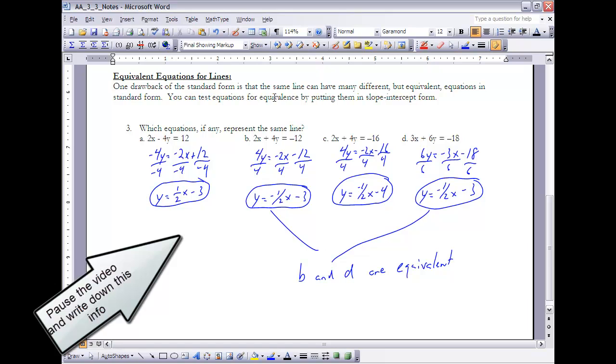When I do that, you'll notice that both B and D, you ended up with y equals negative one-half x minus three. Therefore, B and D are equivalent equations. And if you look at that, 2x plus 4y equals negative 12 and 3x plus 6y equals negative 18. If this one here is a multiple of this one here. If I take it, I multiply B by three halves or D by two thirds, I would get the other equation there.